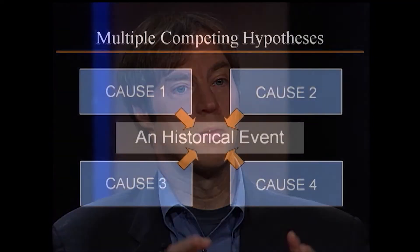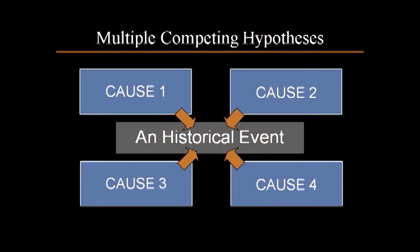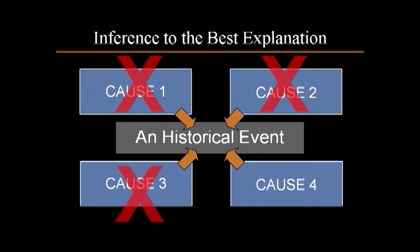The method works like this: if there's something you want to explain in the past, you propose a number of competing causes. You evaluate each one against our experience to see which one best explains the evidence, and then you infer that cause which would best explain the evidence. That's exactly the method I used in making the case for intelligent design, based on the presence of information in DNA. As I examined different possible causal explanations, I found there was only one cause known to produce the effect in question — namely digital code or information — and that cause is intelligence.